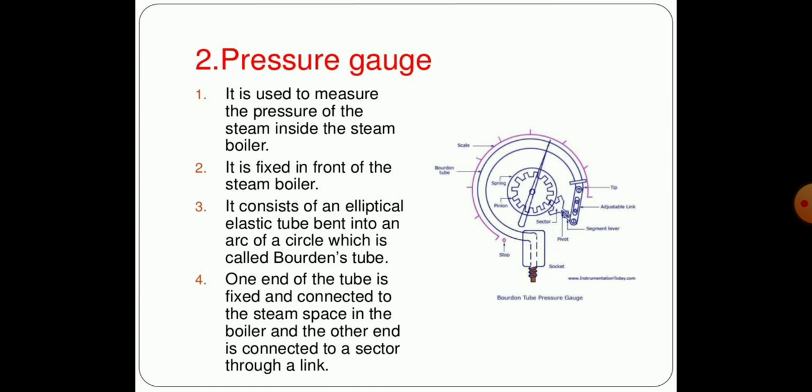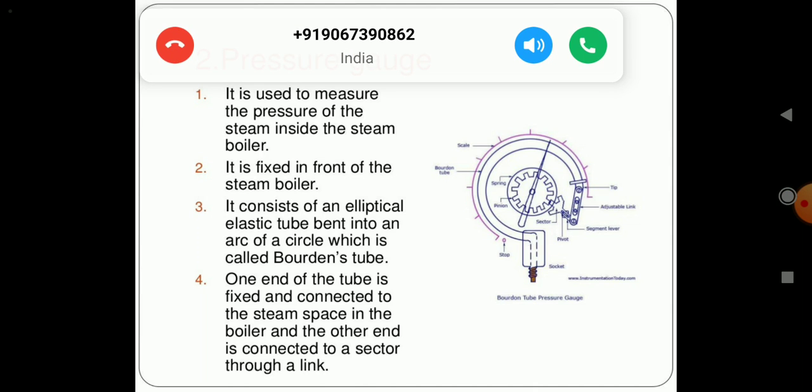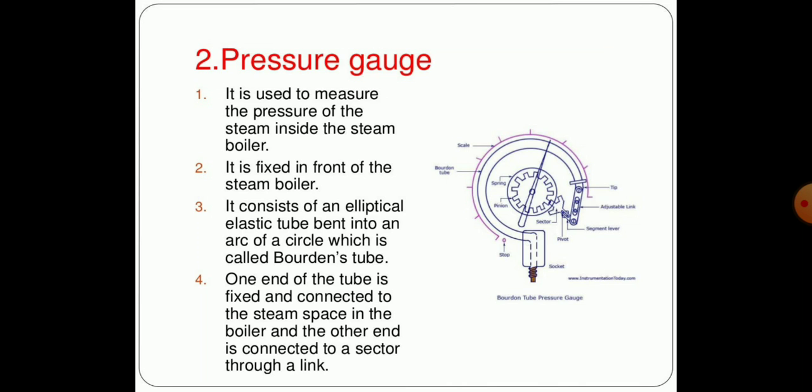It is fitted in front of the steam boiler. It consists of an elliptical elastic tube, which is called the Bourdon tube, which is bent into an arc or circular form with particular measuring scales and a pointer is attached which can be directly visualized by the user and gives the pressure inside the boiler. One end of the tube is fixed and connected to the steam space in the boiler and the other end is connected to the sector through a link.